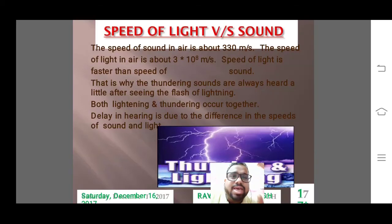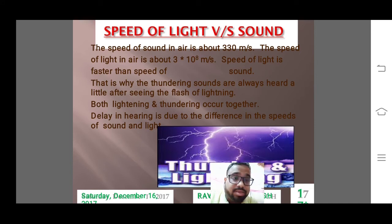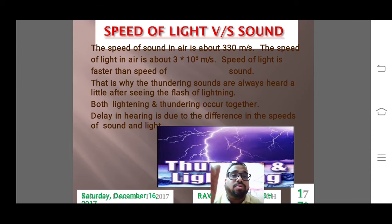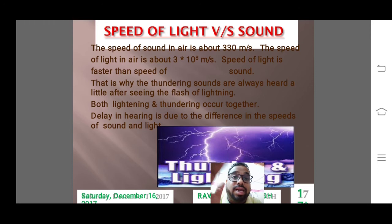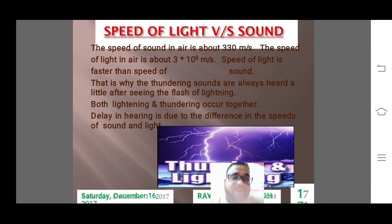The speed of sound in air is 330 meters per second, but the speed of light is 3×10⁸ meters per second, which means the speed of light is faster than the speed of sound. That is why thundering sounds are always heard a little after seeing the flash of lightning, because light travels faster.